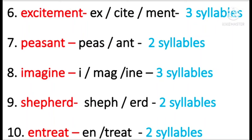Peasant — peas-ant — two syllables. Imagine — i-mag-ine — three syllables. Shepherd — shep-herd — two syllables. Entreat — en-treat — two syllables.